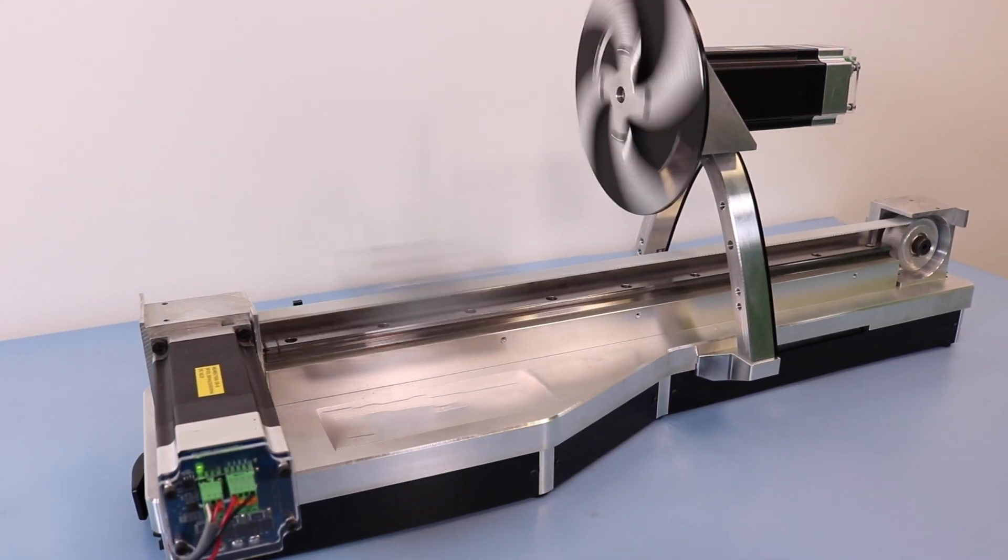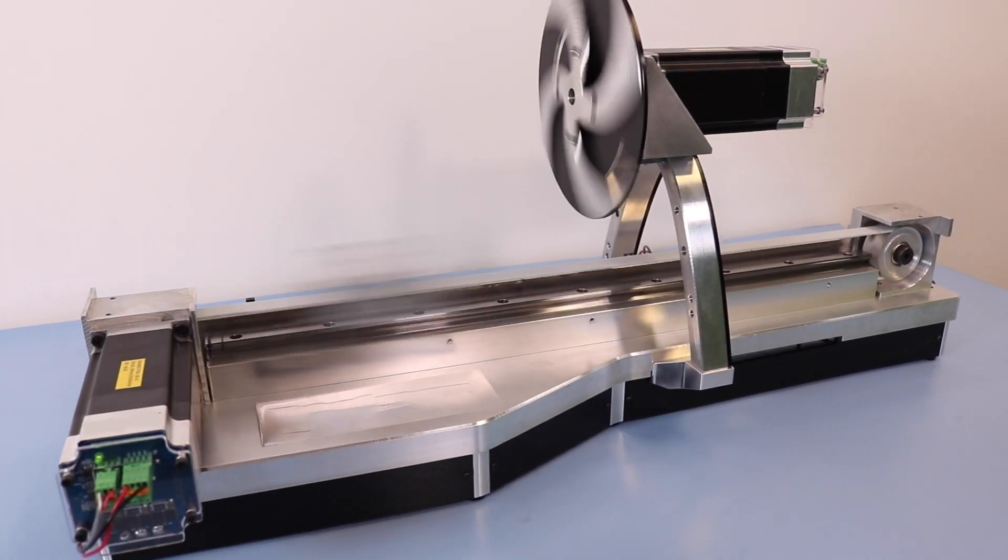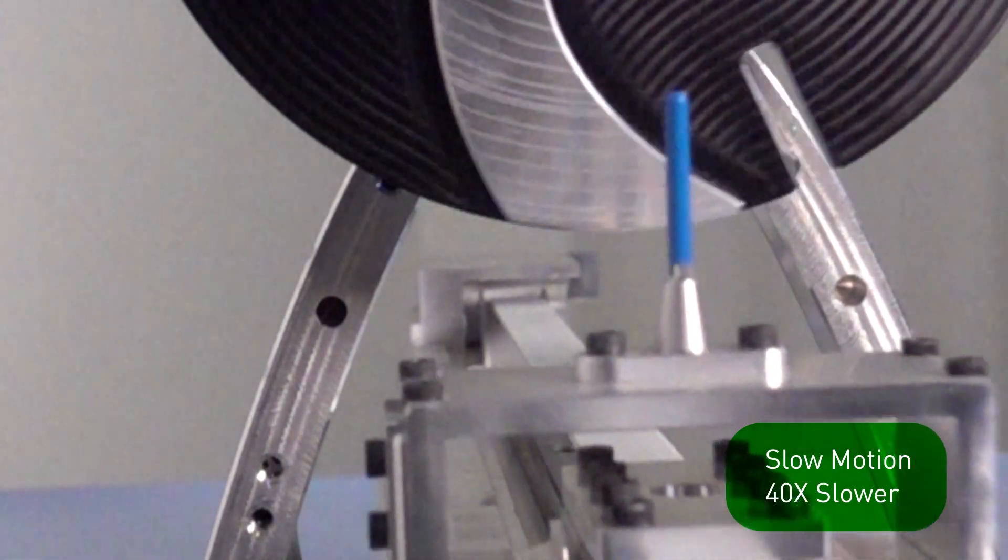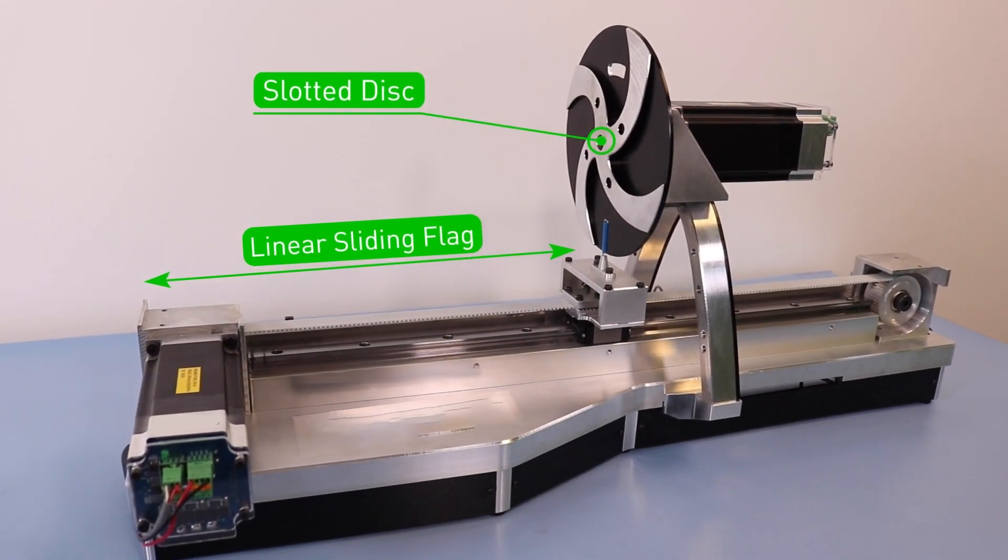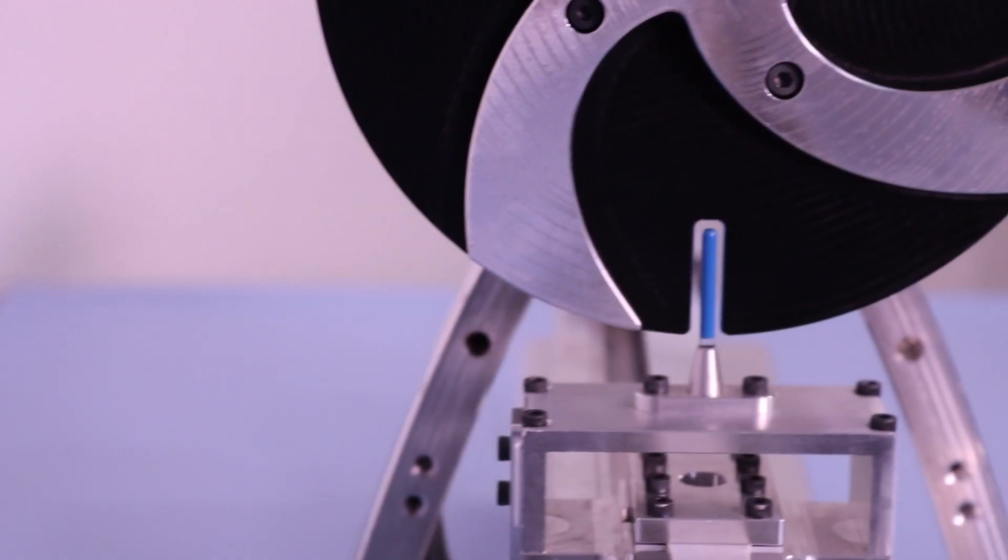Multi-axis motor systems used in industries like robotics and industrial automation require highly precise motion control. Here we have a two-axis brushless DC motor system consisting of a spinning slotted disc and linear sliding flag.